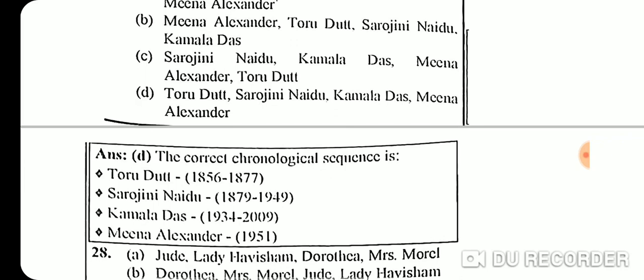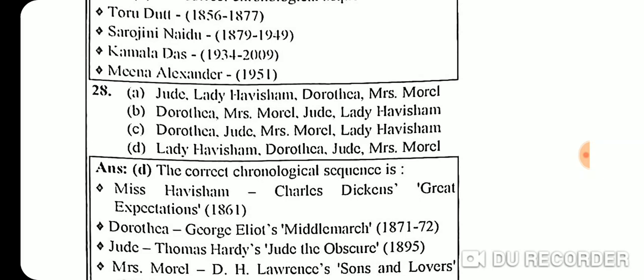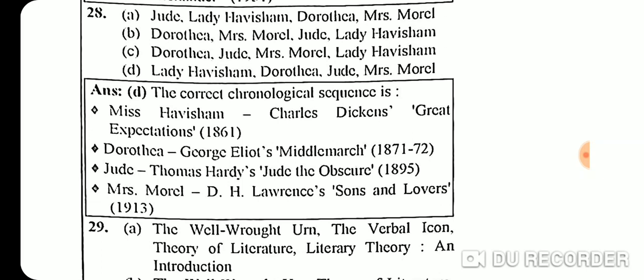Question 27 chronological sequence of Indian women writers: Toru Dutt (1856-1877), Sarojini Naidu (1879-1949), Kamala Das (1934-2009), Meena Alexander (1951-present).